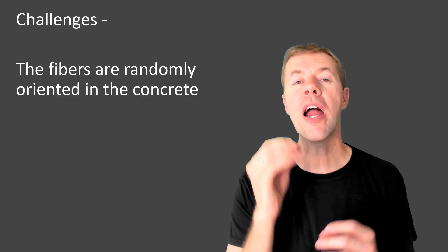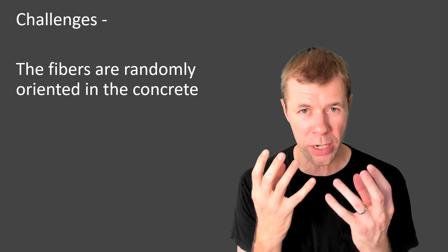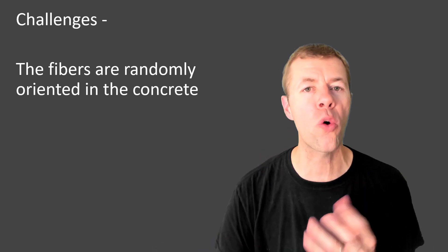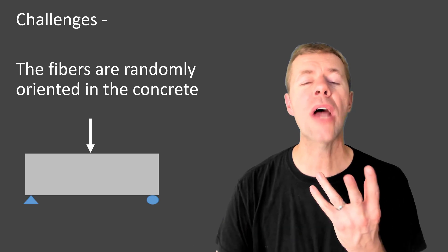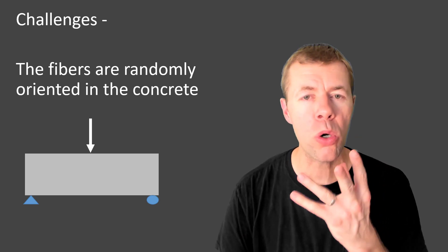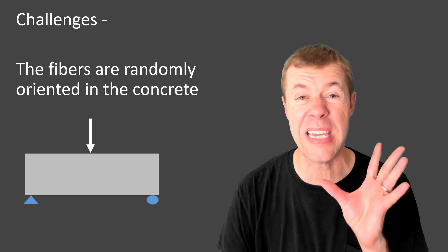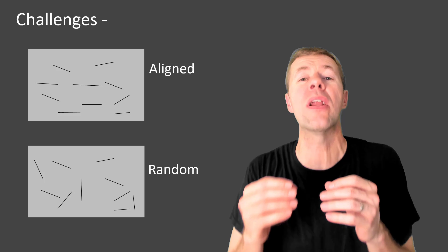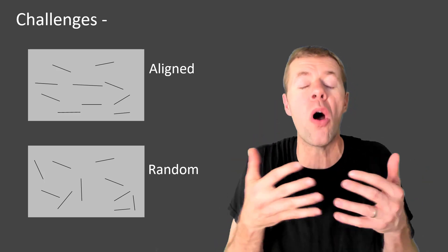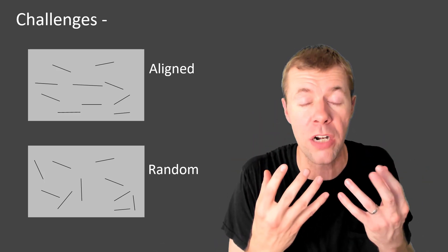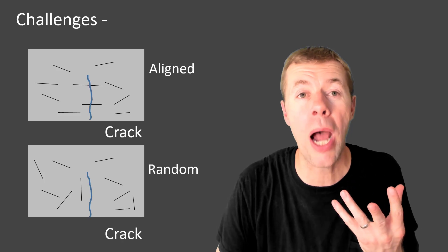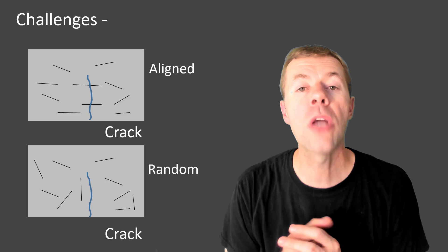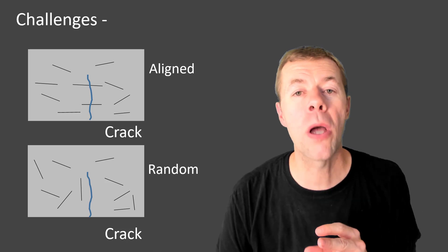There are some challenges though. Fibers are randomly oriented in our concrete, and that's not the best. We'd love to be able to control the orientation. So once I started to load, if I knew where a crack was going to form, I'd like my fibers to be there. If we zoomed in on this region, what I'm talking about is if I could align my fibers all up where I know that crack is going to form, then it could stop it. But if I have them randomly distributed all over the place, some may help me and some may not.